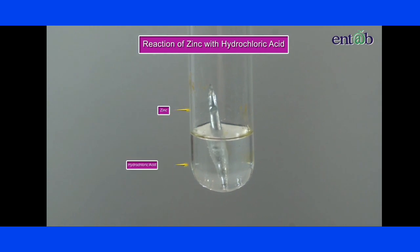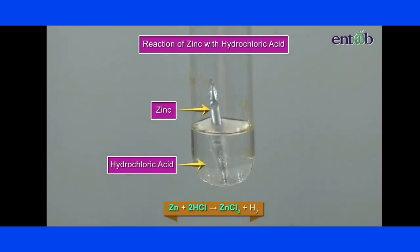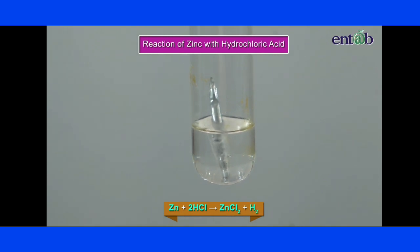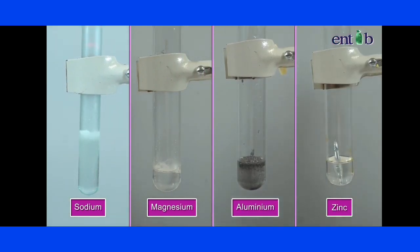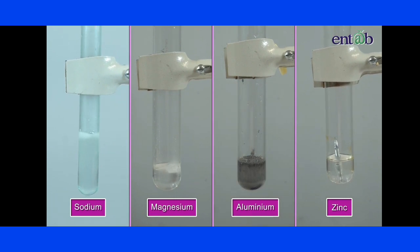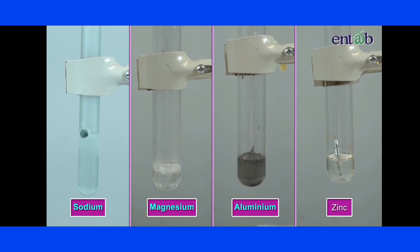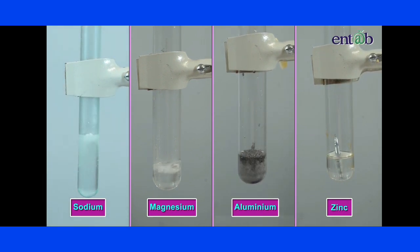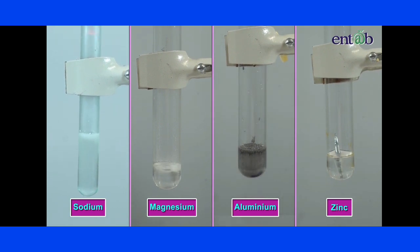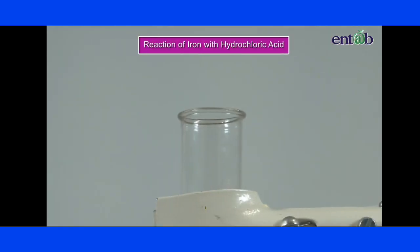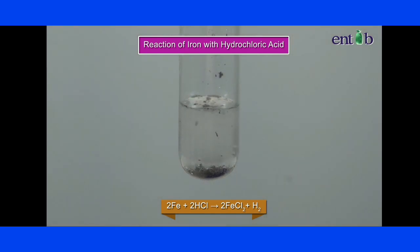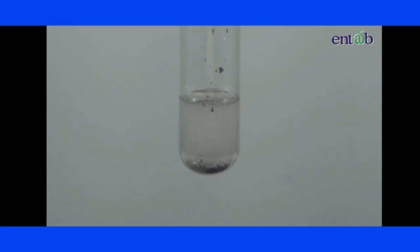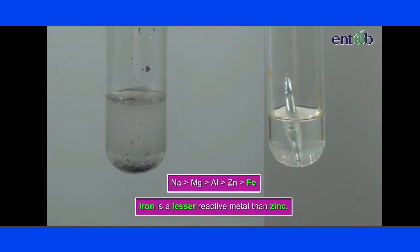Zinc reacts with dilute hydrochloric acid to form zinc chloride and hydrogen gas. This is a slower reaction compared to sodium, magnesium and aluminium, indicating that zinc is a less reactive metal than all three. Iron reacts slowly with cold and dilute hydrochloric acid to form ferrous chloride and hydrogen gas. The slow reaction indicates that iron is a lesser reactive metal than zinc.